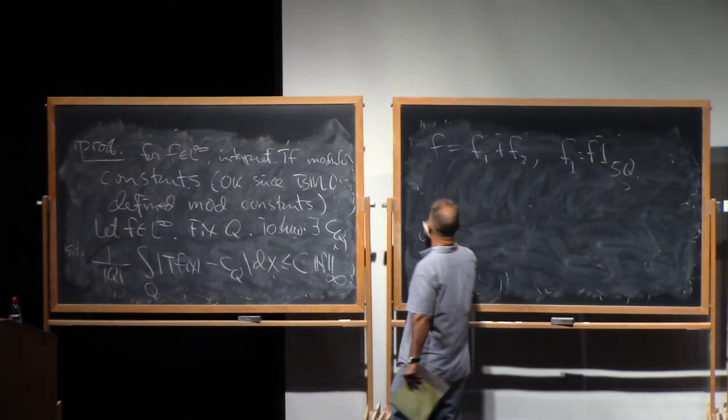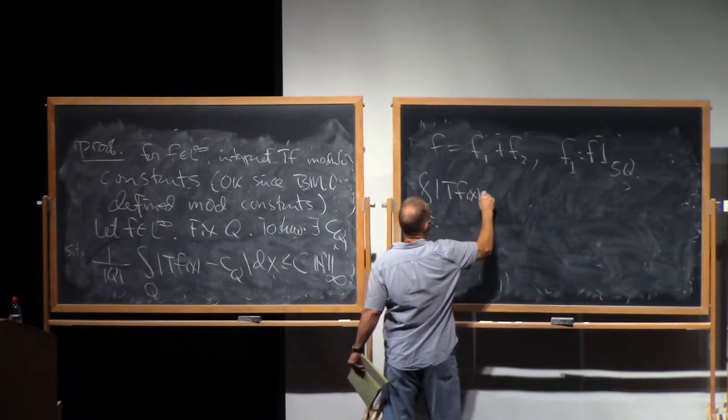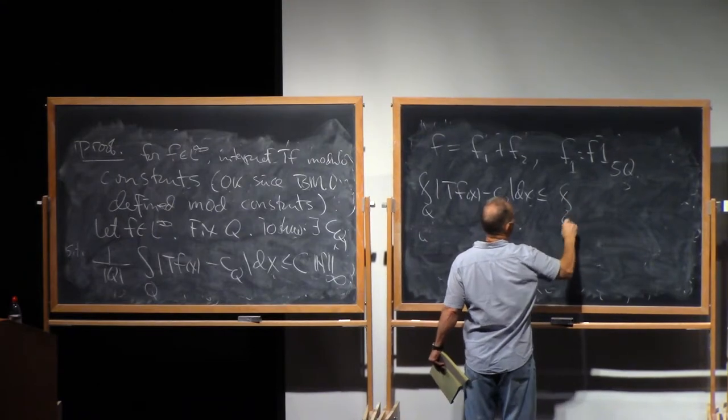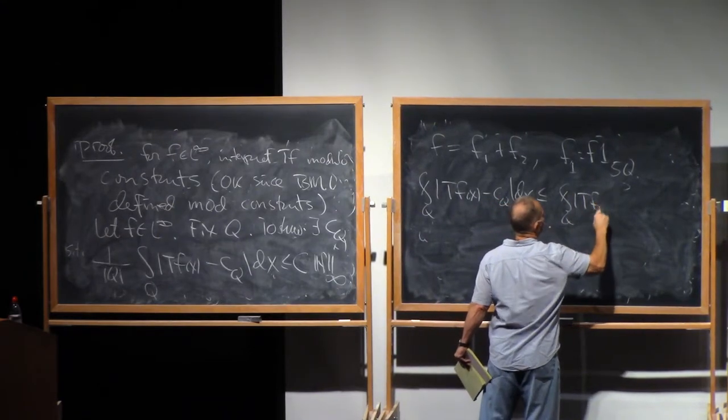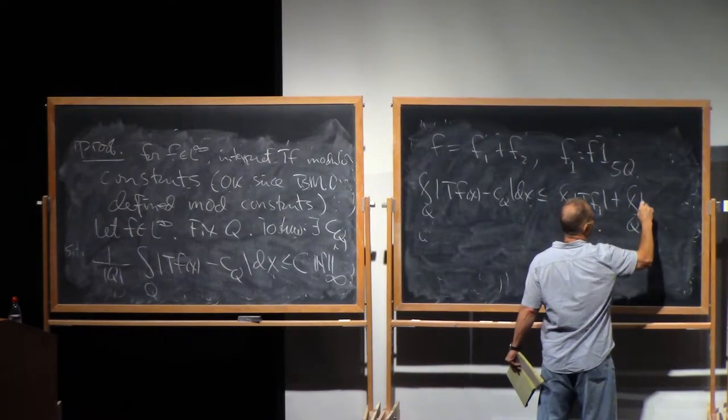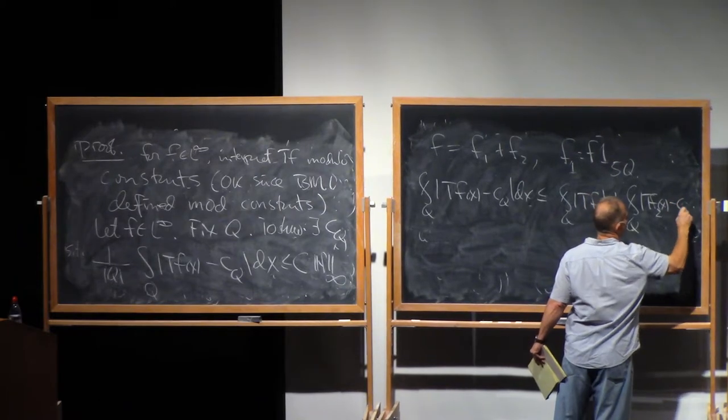And so, the mean value on Q of Tf of X minus CQ is gonna be less than or equal to the mean value of Q of T of F1 plus mean value of Q minus CQ.